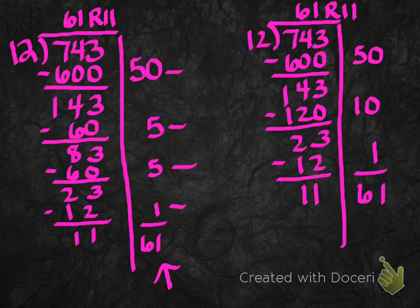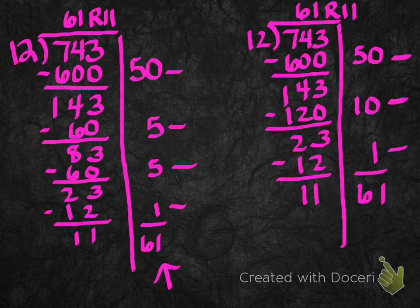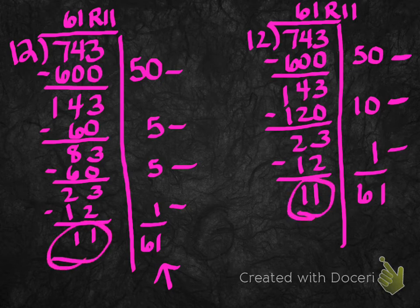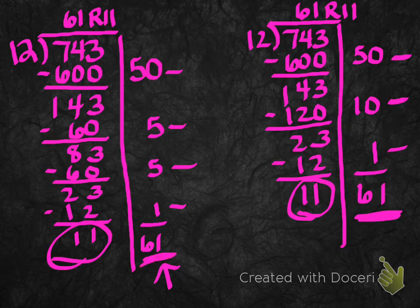So if we look at the second problem, I started with 50 like we did in the first. Multiplied 50 times 12, got my 600, got 143 after I subtracted. Then I put a 10, multiplied 10 times 12, got 120, subtracted that from my 143. I had 23 left. Then I did 1 times 12, which is 12, subtracted, and I got my 11 as my remainder on this side, just like I got over here on the left. I added my 50, my 10, my 1. I got 61, just like I did here on the left. So my answer is 61 remainder 11. Same problem done a couple different ways. Same answer.